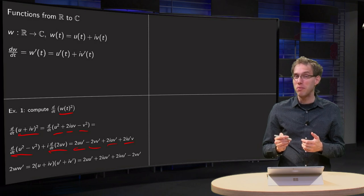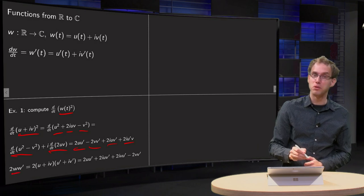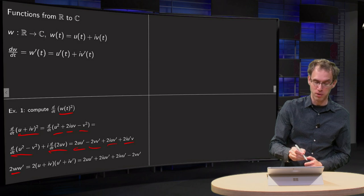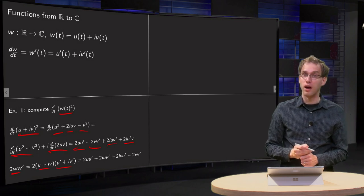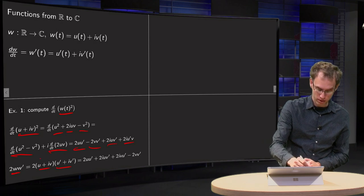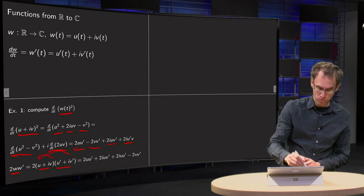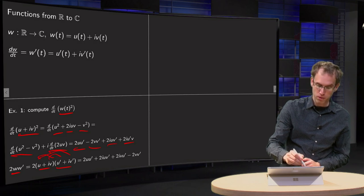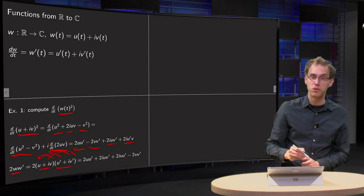Well, let's see, because maybe we have gotten that. If we compute 2 times W times W prime, we get (u + i·v)(u′ + i·v′), which expands to 2·u·u′ + 2·u·i·v′ + 2·u′·i·v − 2·v·v′.